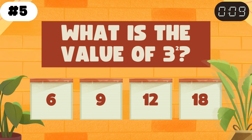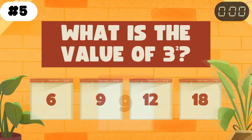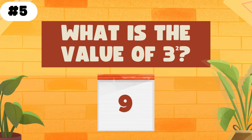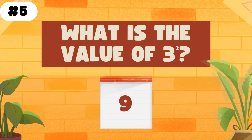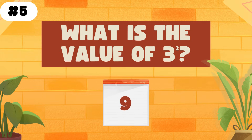What is the value of 3 squared? The answer is 9. In math, a number squared refers to the result of multiplying a number by itself.